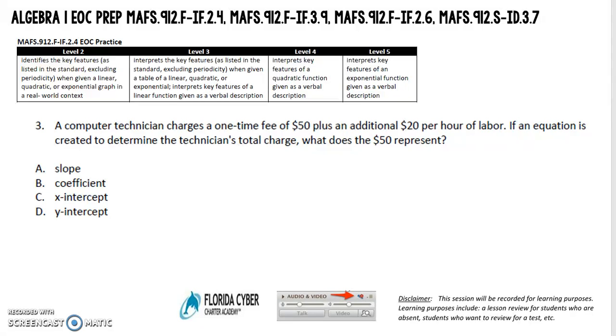The standard that we're looking at today is all about some key features. So a computer technician charges a one-time fee of $50 plus an additional $20 every hour of labor. If an equation is determined to use the technician's total charge, what does the $50 represent?